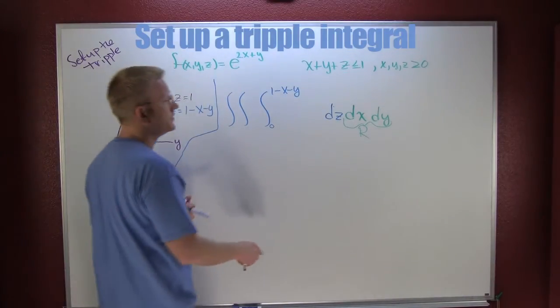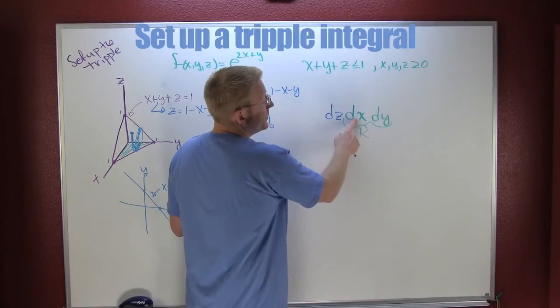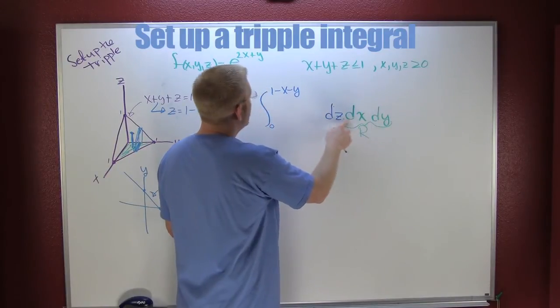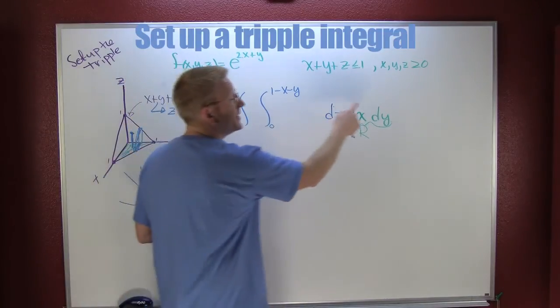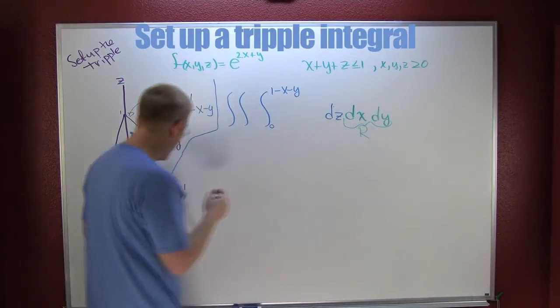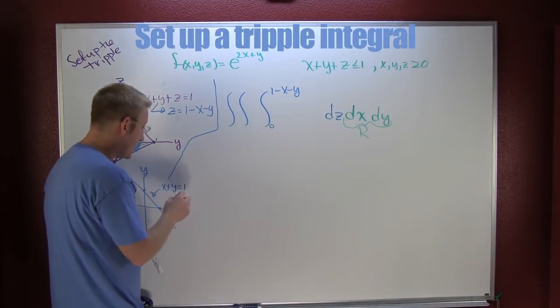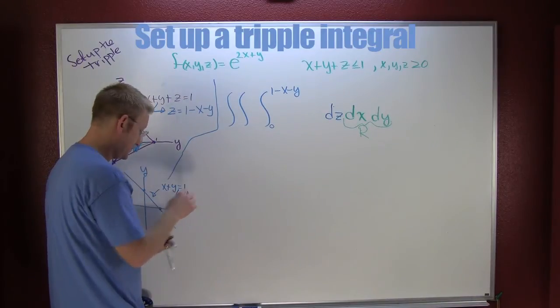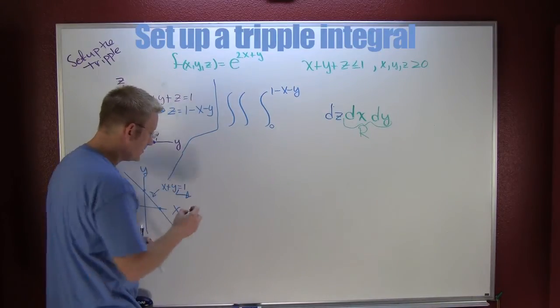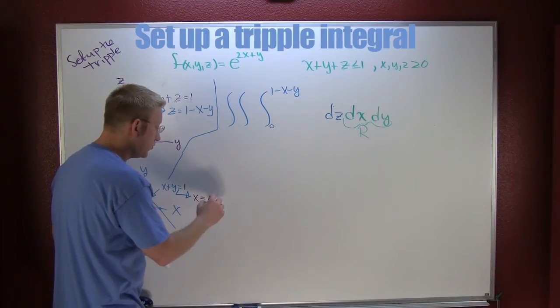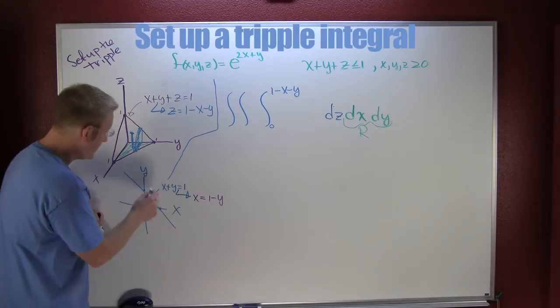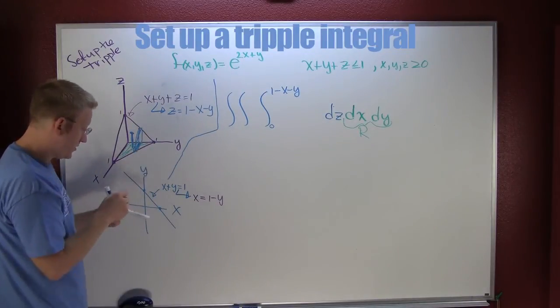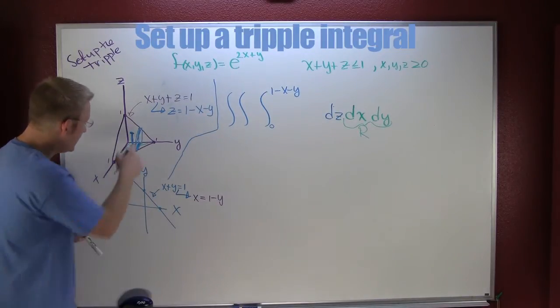Alright, far out. So if Y is coming next, then what do the limits of integration need to be in terms of? They need to be in terms of Y. So I'm going to go and I'm going to solve that guy. This is going to get us that X is equal to 1 minus Y.